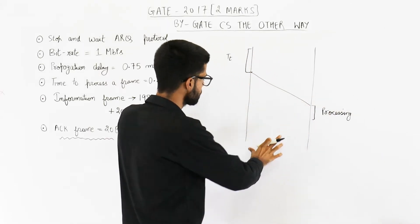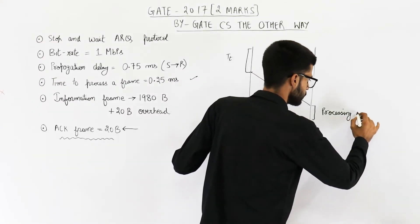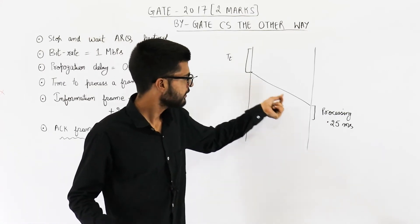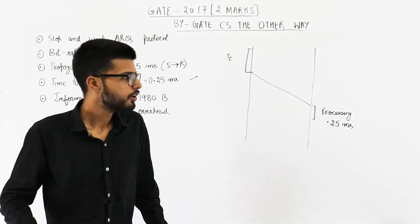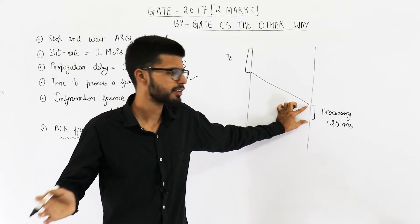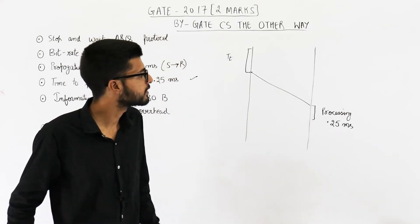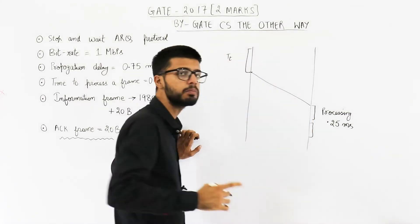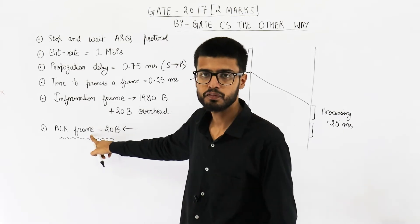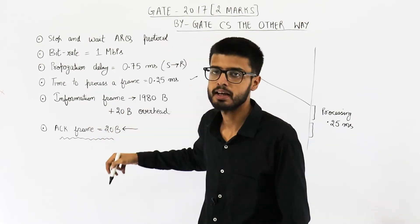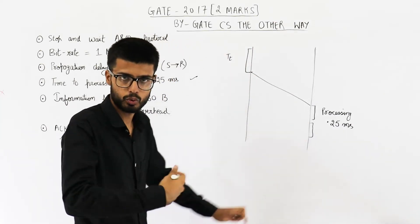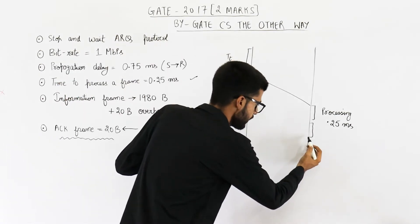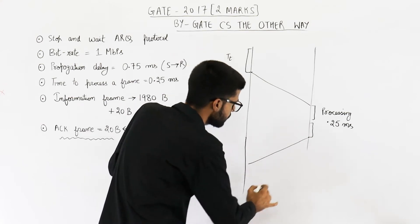This processing time is given as 0.25 milliseconds. At that point, the receiver has received a complete frame, so it will remove the extra bits, calculate CRC and other stuff, and prepare the acknowledgement frame — all of this is done in the processing delay time. Now the acknowledgement frame is prepared, and it will take some time to get transmitted because the size of the acknowledgement frame is not negligible — they have mentioned it is 20 bytes. Suppose those 20 bytes take some time to be put onto the channel. At that point, the last bit of the acknowledgement frame is on the channel and will start traveling back to the sender.